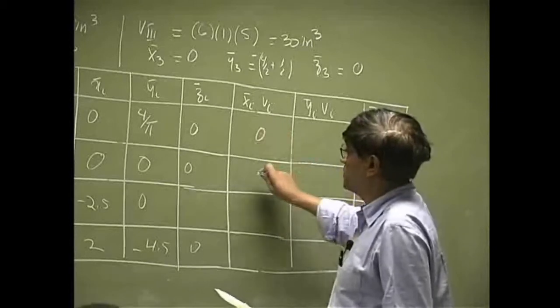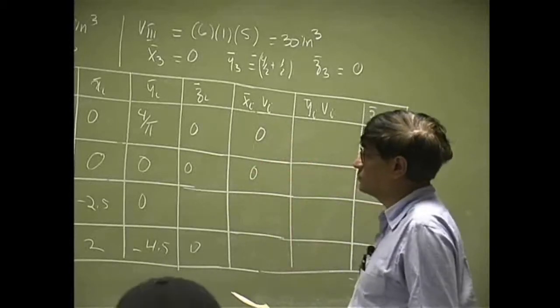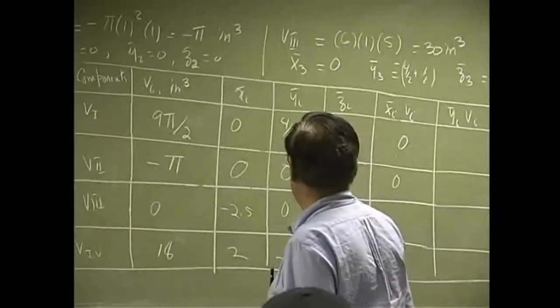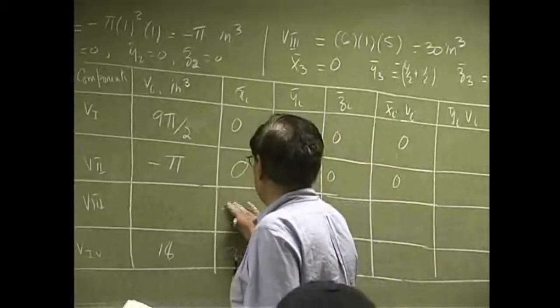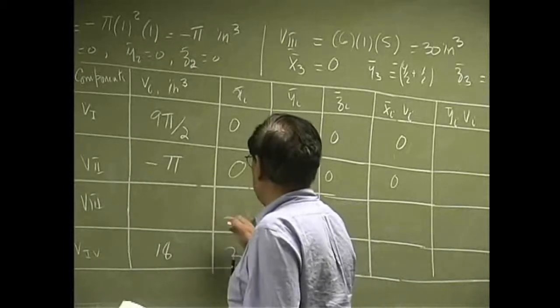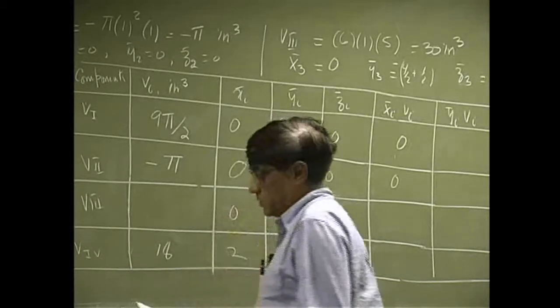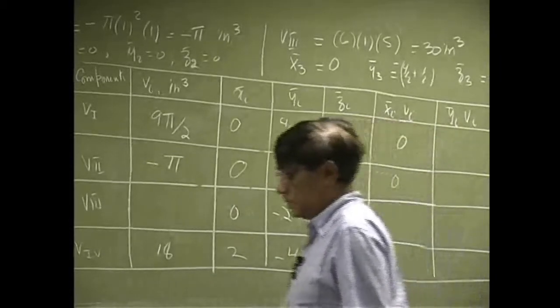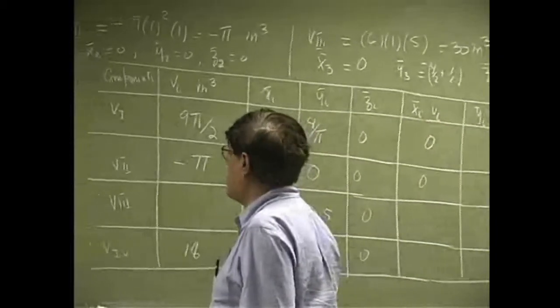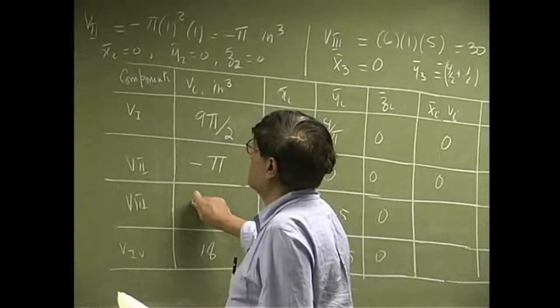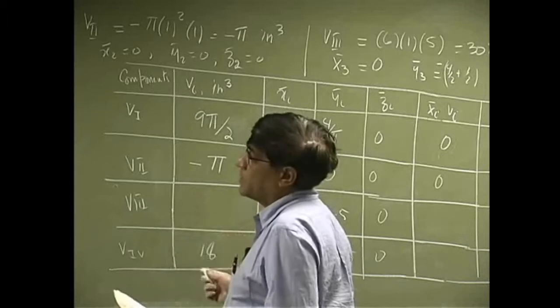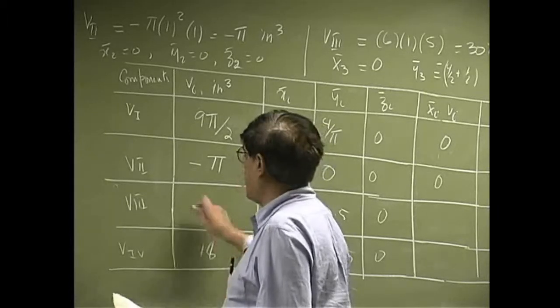First one goes to zero. Second one goes to zero. This one is taken here. X should be zero, negative 2.5, and zero. And the volume here, you find the first one basically: 6 times 5 is 30.